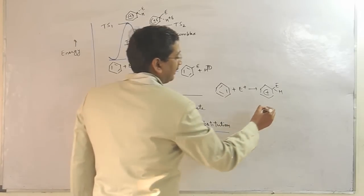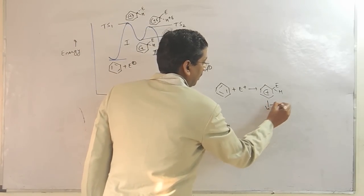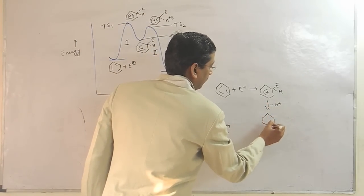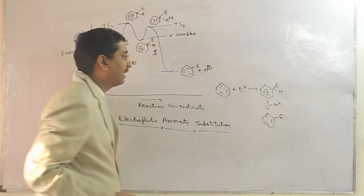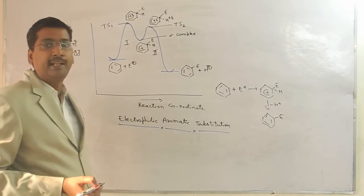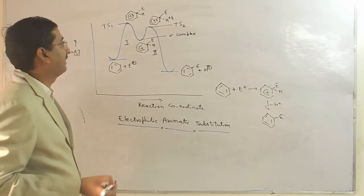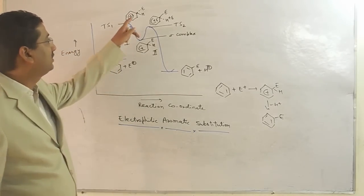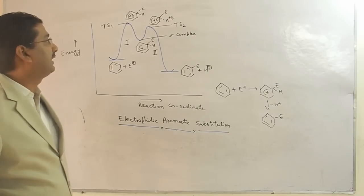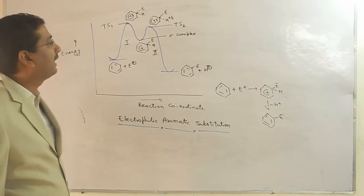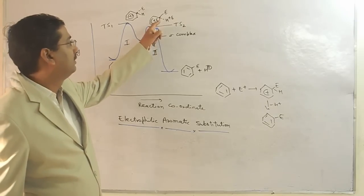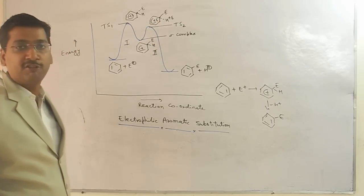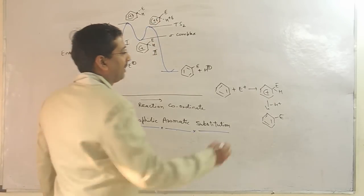After the sigma complex, this is your second step and this is your intermediate. So there are two transition states. In the first transition state, you have the electrophile and benzene attached with the pi bond. In the other reaction, you have the hydrogen H+ removed.